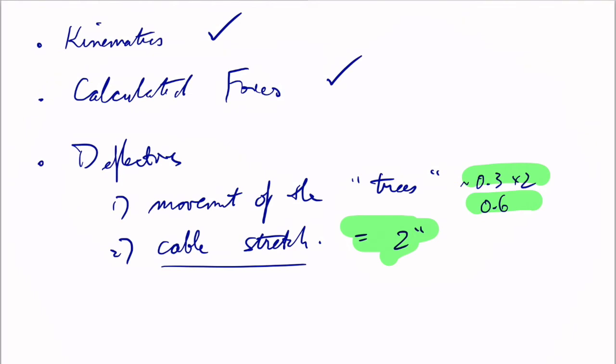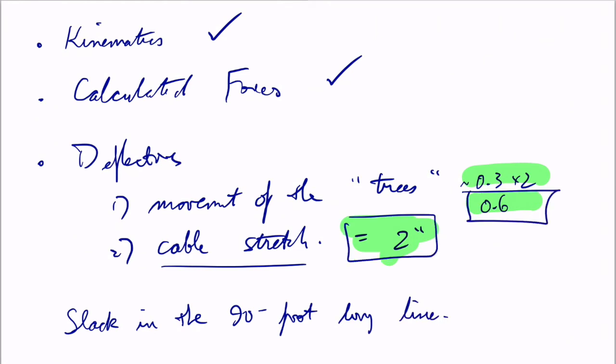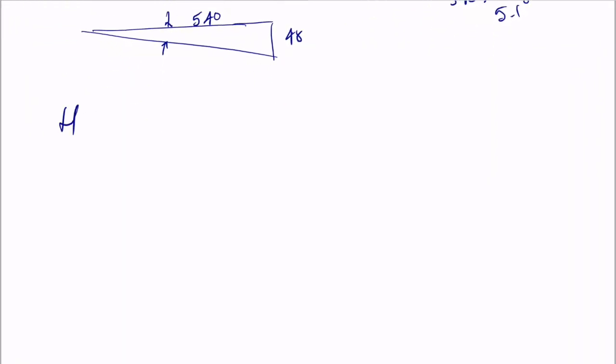Let's just quickly throw these deflections back into the kinematics to see if it's reasonable. Remember that we calculated a total of 2.6 inches of slack in the 90-foot long line: two from the cable stretch and 0.6 from the movement of the endpoints. These two things add together.